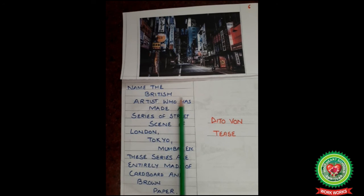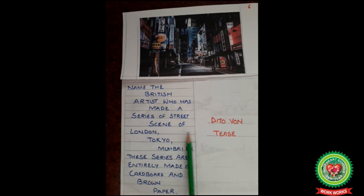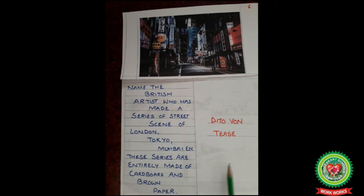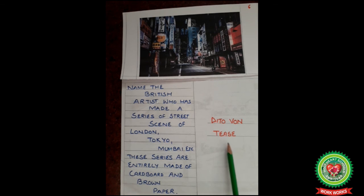Name the British artist who has made a series of street scenes of London, Tokyo, Mumbai, and others. These series are entirely made of cardboard and brown paper. Who is he? He is Jato Von Tees.